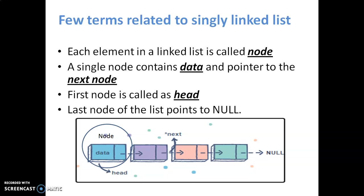Now these are a few terms related to a singly linked list. Each element in a linked list is called a node. A single node contains two things: data and a pointer to the next node. As discussed, every node is linked with pointers and every node has a forward directional pointer. Here you can see in this example: a single node has two elements — data and a node pointer which points to the next node. The first node in a singly linked list is called the head, and the last node points to null because there are no more nodes further.